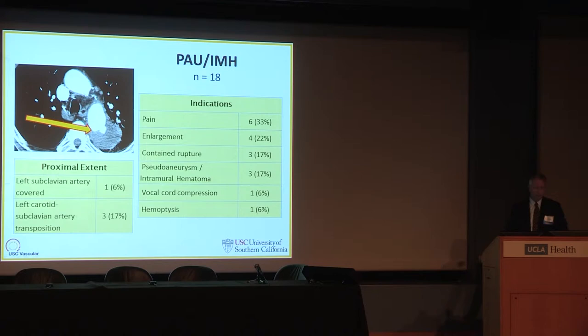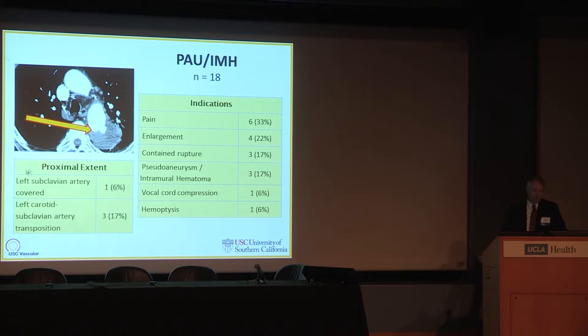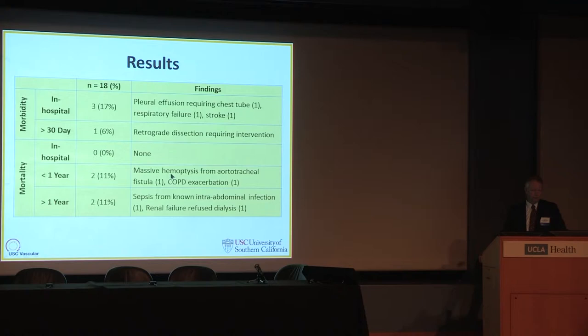Our series of 18 patients with this problem showed that basically all patients were symptomatic; we did have three contained ruptures. We covered the left subclavian in one patient without revascularization and in three with carotid-subclavian transposition. In-hospital mortality was zero. We did have some in-hospital morbidity including pleural effusion and chest tube management. Patients can have pulmonary and neurologic issues, and we had one patient with a retrograde dissection that required intervention.